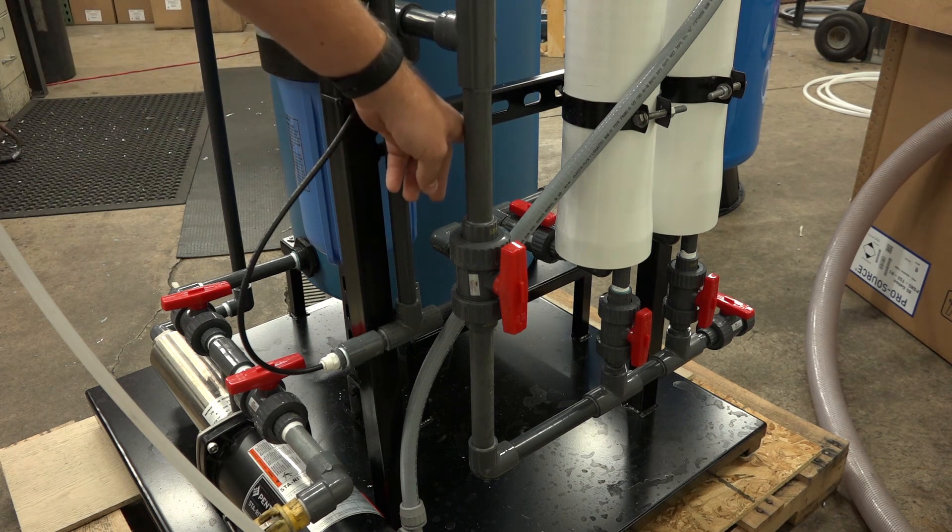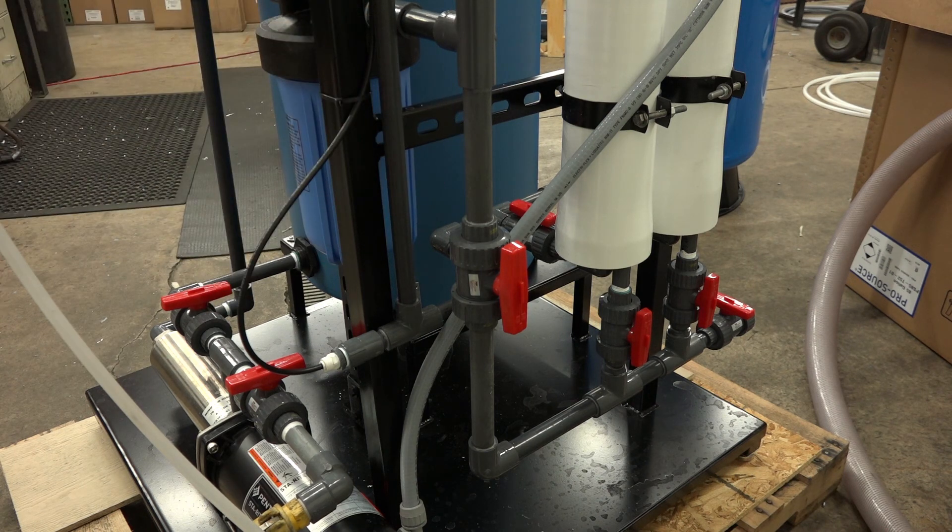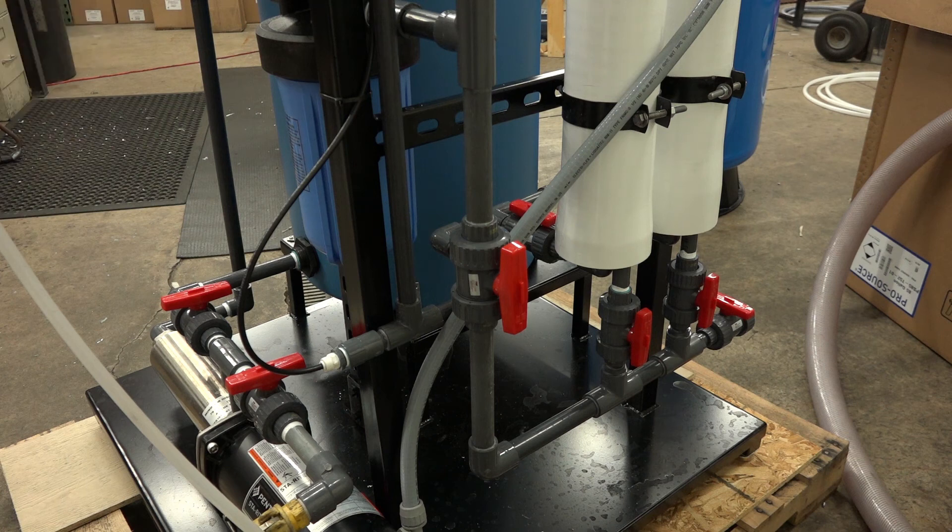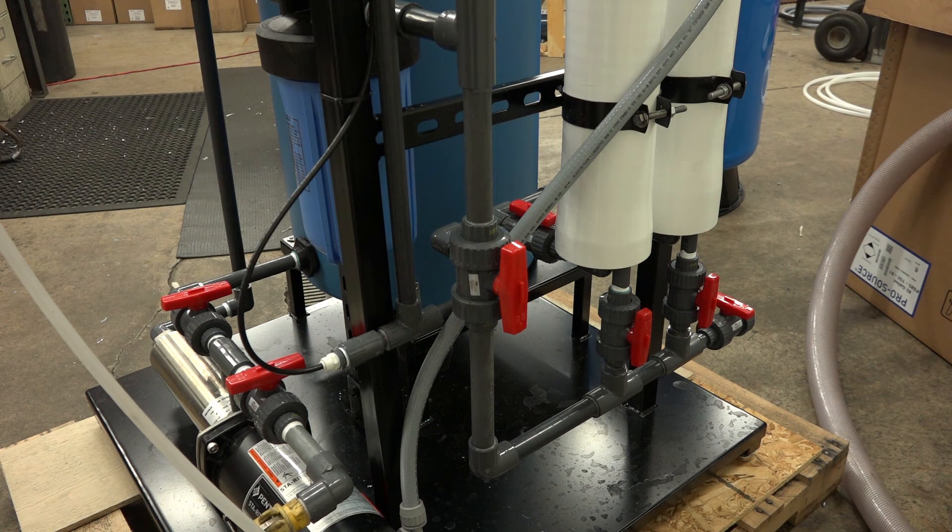On the front side, you can barely see it, but there are two valves. Those are your product water valves. Again, if you're not using that membrane, close off all the valves to that particular membrane housing.